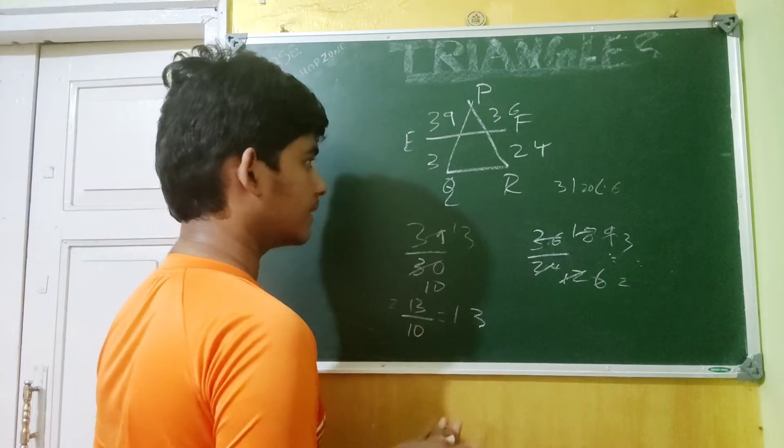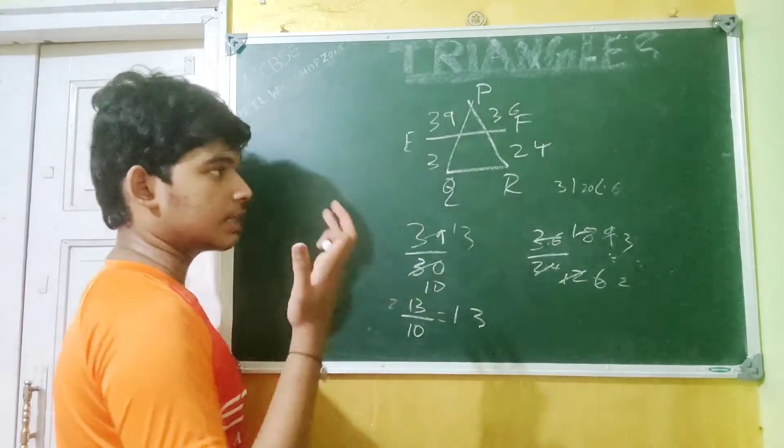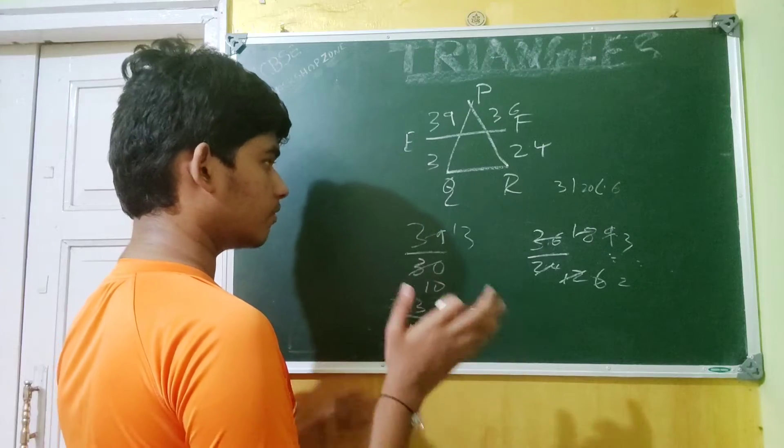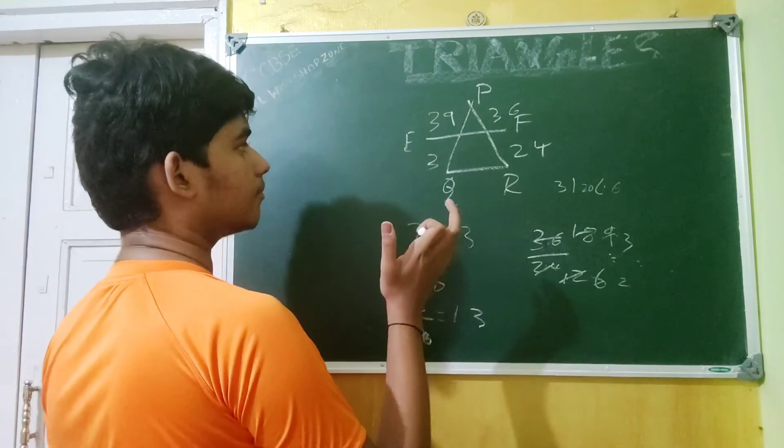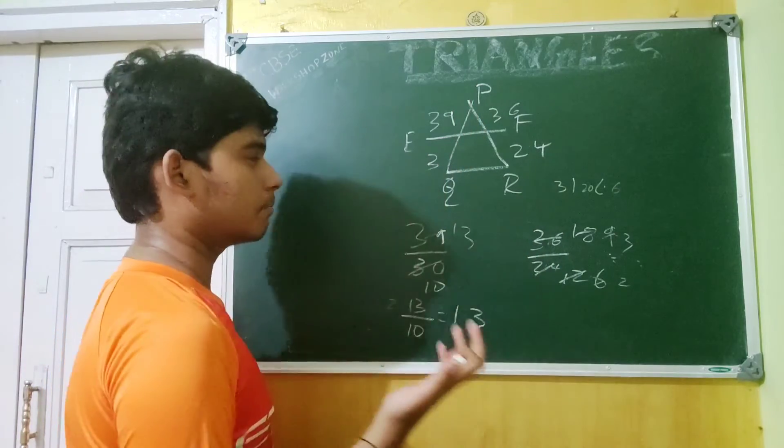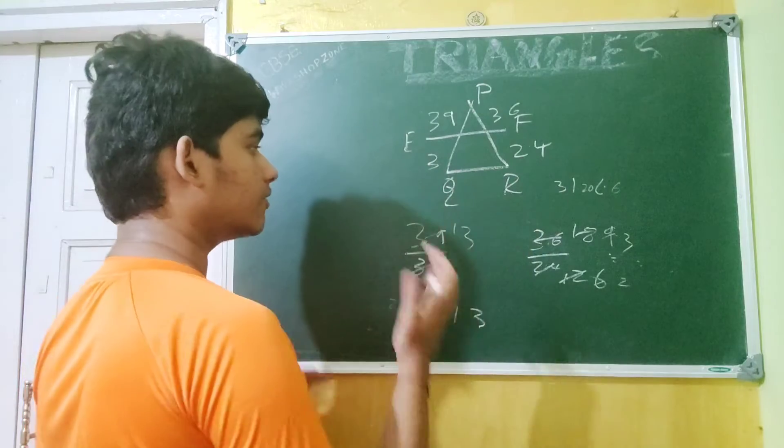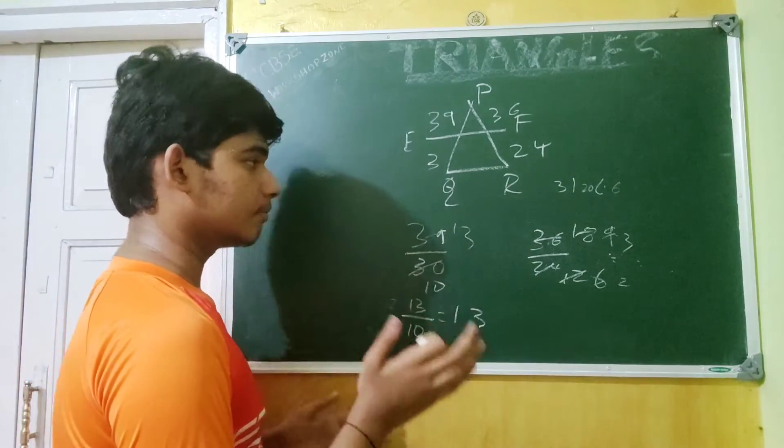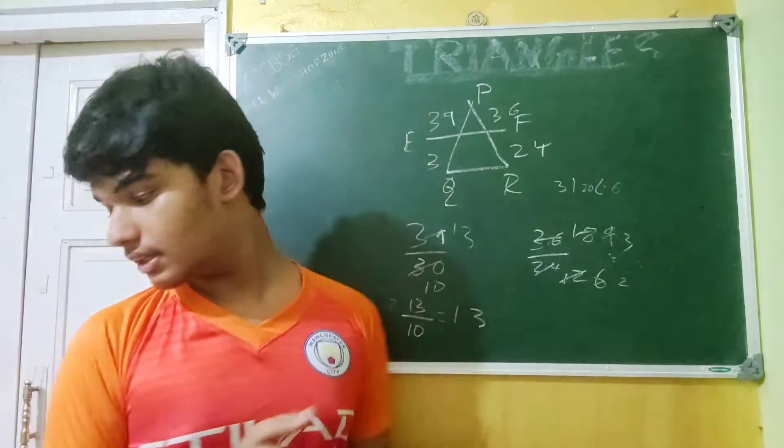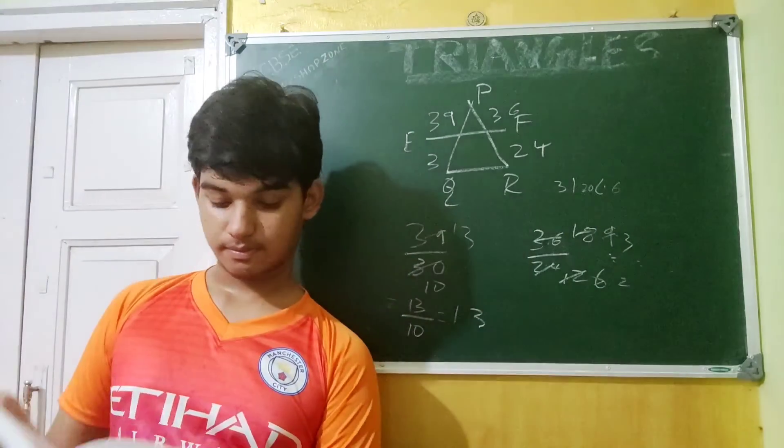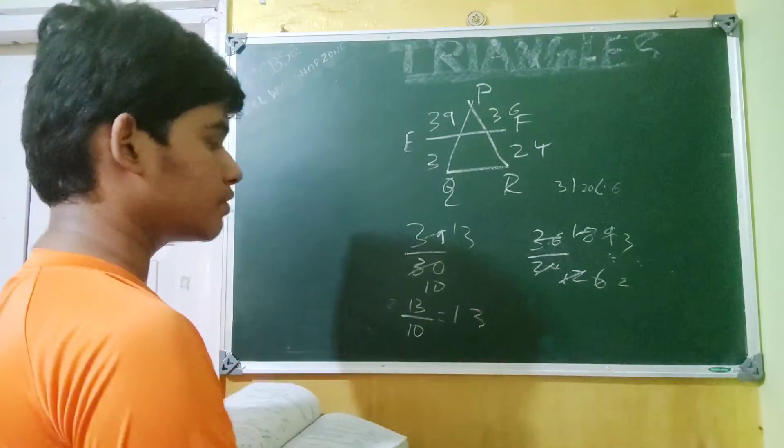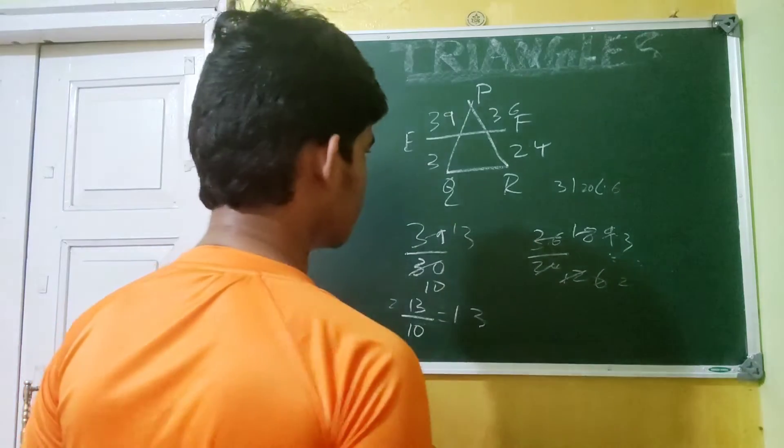Here we have 13 by 10. So obviously the first answer is not equal. So now that we have understood how to do this, which is basically by taking PE by EQ by using the basic proportional theorem and checking if both sides are equal or not. So the final answer for this is that no, EF is not parallel to QR.